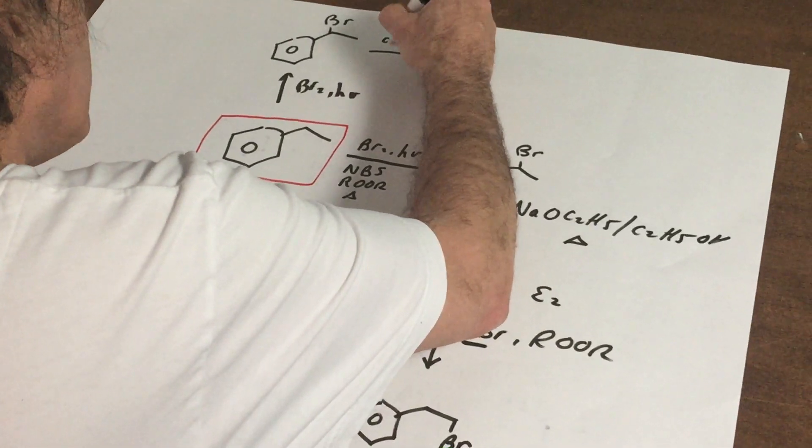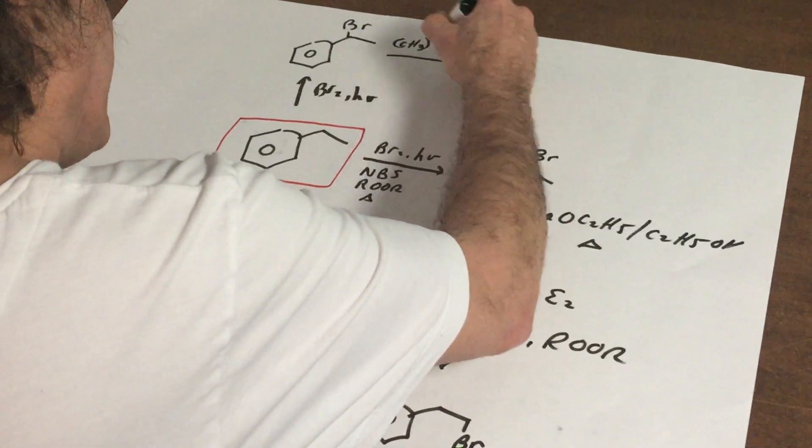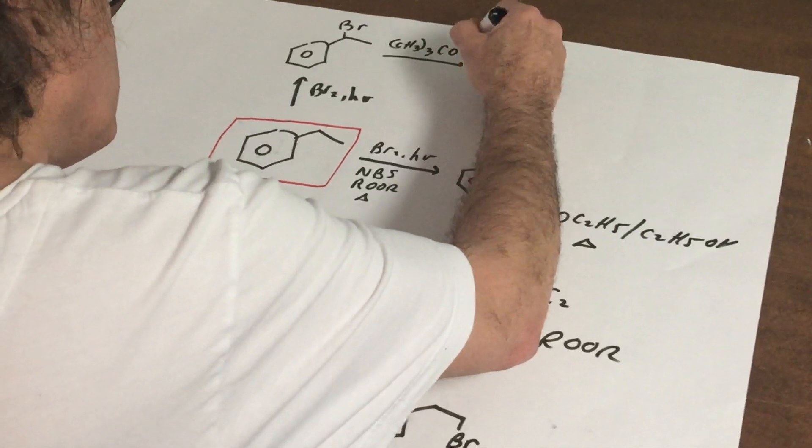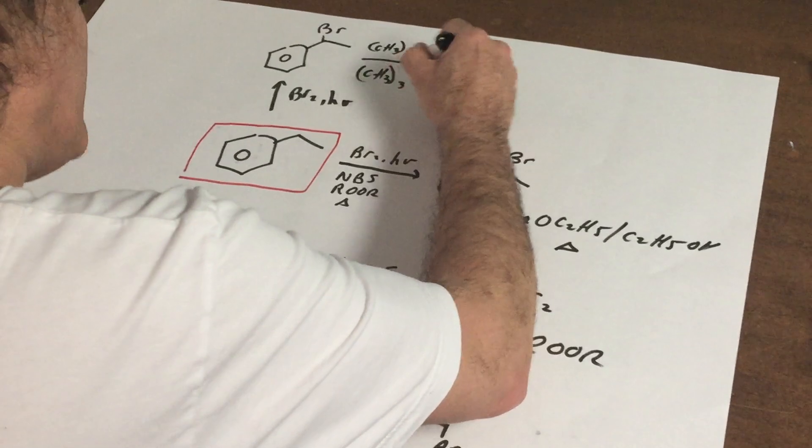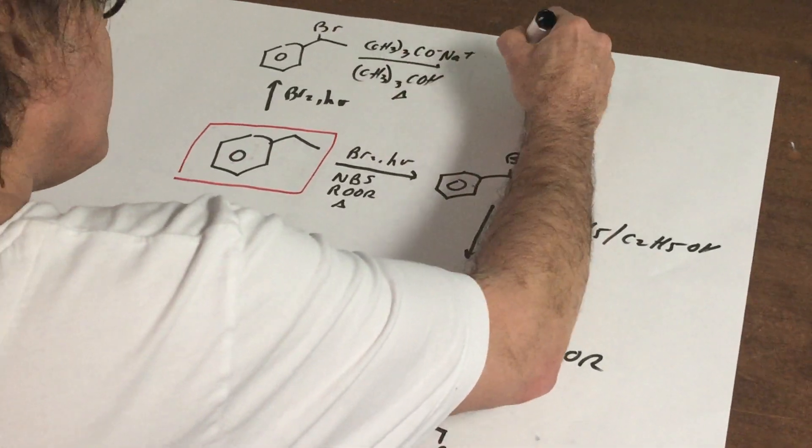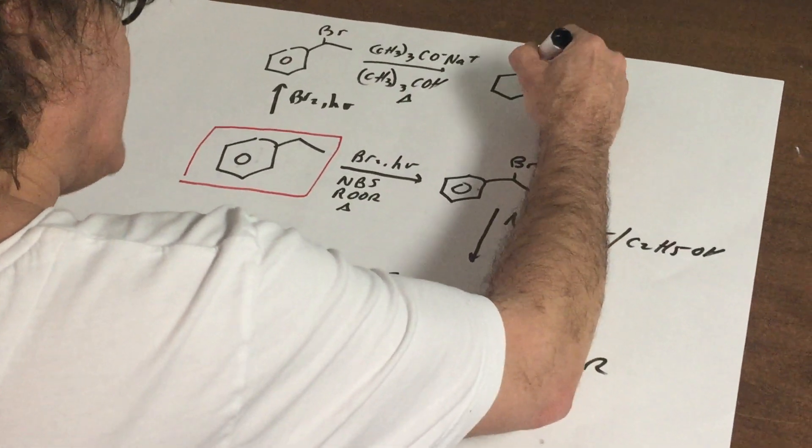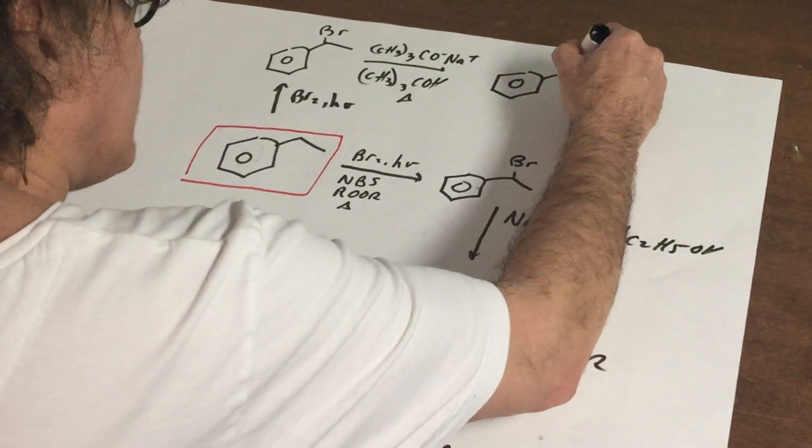Let's use a different base now. I'm going to use a very big, bulky base. We can use sodium t-butoxide. There's the solvent. Heat it. And once again, we would get this.